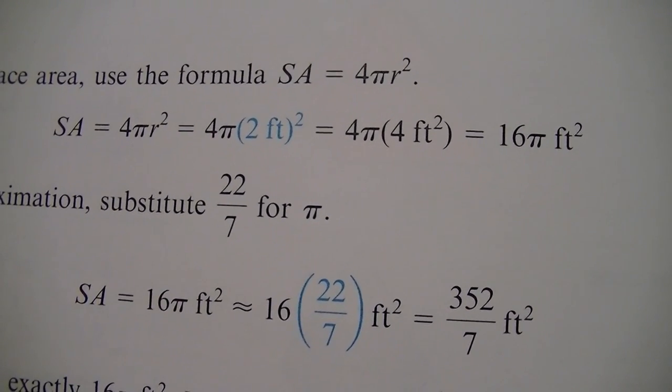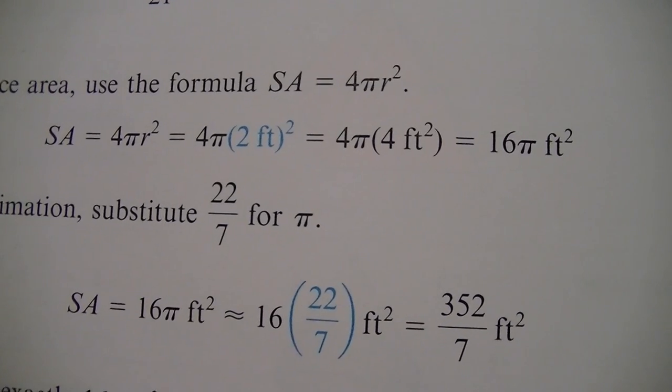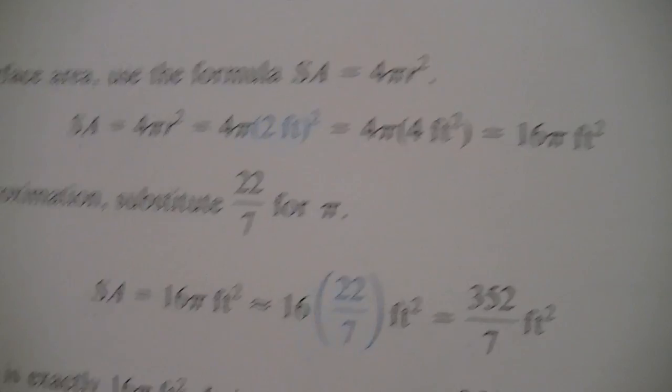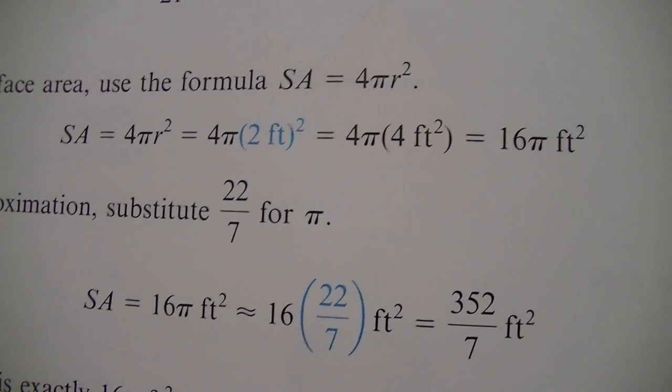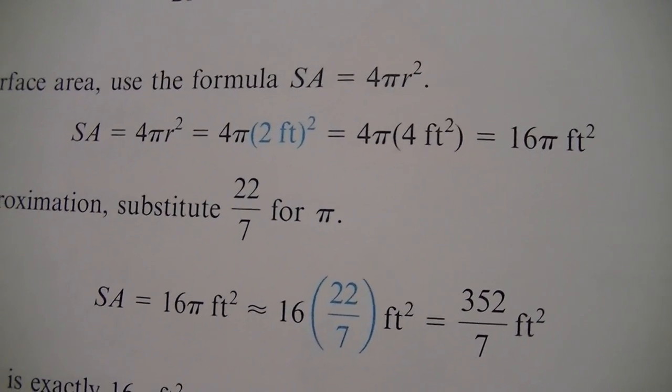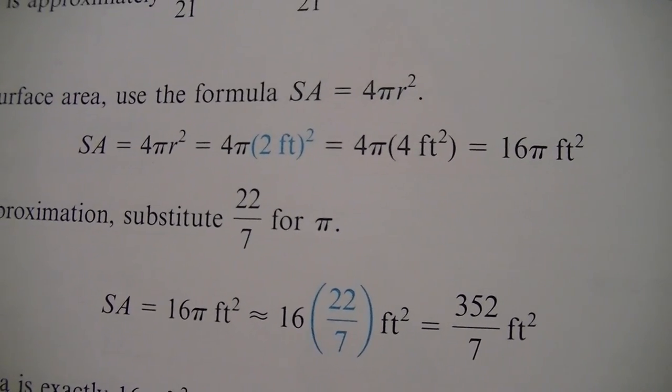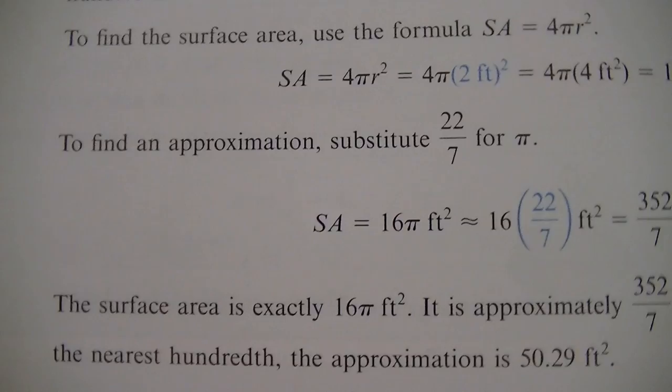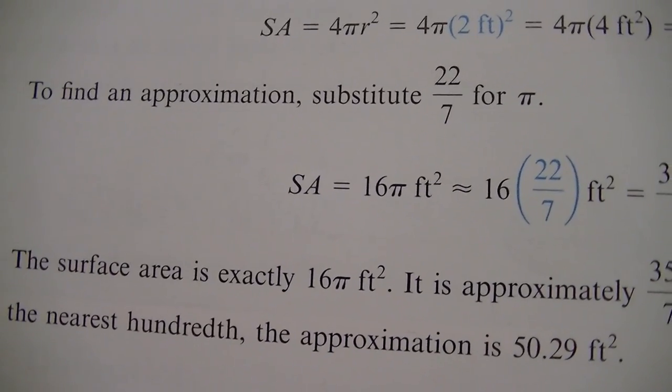Notice that feet, when we say two feet times two feet, we're saying feet times feet. So it's feet squared. And we're just going to multiply our two numbers that we have. So four times four gives us 16. We'll just keep the pi in there for right now, feet squared. Now we're going to substitute our approximation for pi, which is 22 over seven. So we're just going to plug that bad boy into the equation.